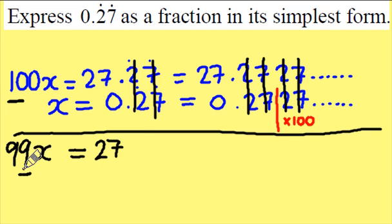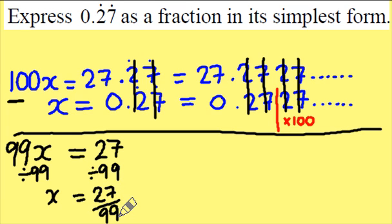So 100x's take away an x leave me with 99x's and 27 is the only number remaining. Dividing both sides by 99 leaves me with x equals 27 over 99. Now I need to check if this fraction simplifies which it does. So simplify it once by dividing by 3. Top number 27 divided by 3 is 9, and 99 divided by 3 is 33. Check once again. 9 and 33 are both divisible by 3.